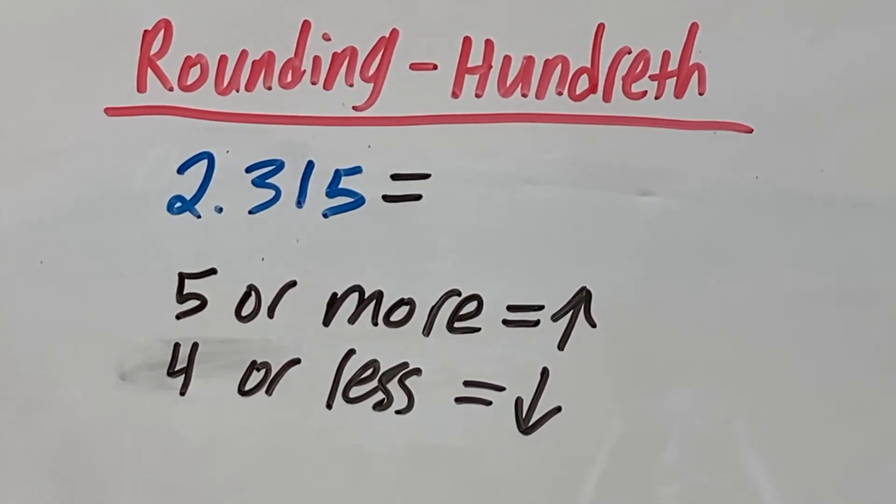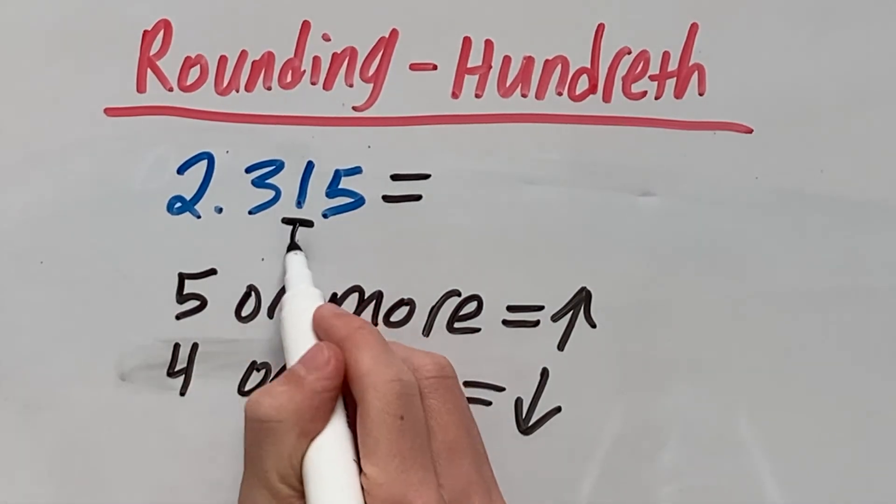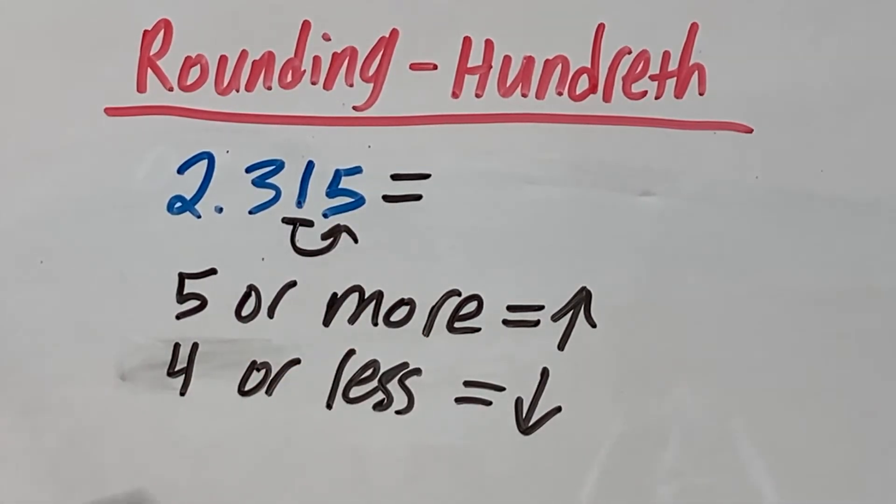Let's look at one final example. For this final example, we have 2.315. Again, we identify the hundredth place, which in this case is 1. We look right next door and see what that number is. In this case, it is 5.